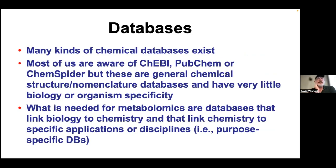There are lots of chemical databases. Many of you have probably heard of PubChem; some have heard of ChemSpider. There's also ChEBI. These are generally structure and nomenclature databases. PubChem tries to cover all known chemicals — it doesn't care whether they're synthetic or from snails or humans or the ocean. There's very little biology or organism specificity associated with them. Unfortunately, a lot of people make the mistake of just saying, 'I found a peak, I found a mass, I'm just going to do a ChemSpider or PubChem search.'